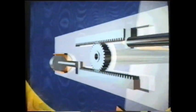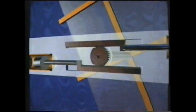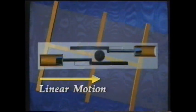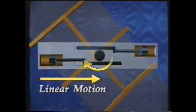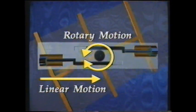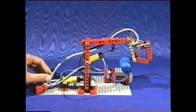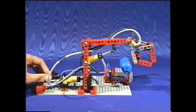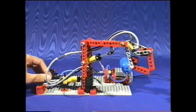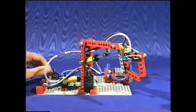A simple gear system, shown in this animation, converts linear to rotary motion. In our pneumatic model, it's a lever that converts linear to rotary motion.